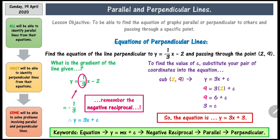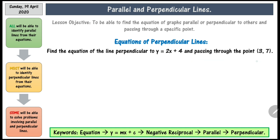You can see that the negative reciprocals are correct and therefore the lines are perpendicular. Have a go at this question: find the equation of the line perpendicular to y equals 2x plus 4, passing through the point (3, 7). The first thing you need to do is find the negative reciprocal of 2, then plug the coordinates into the equation to find the full equation for the perpendicular line. Pause this video, have a go, and when you are ready to check the answer, press play.